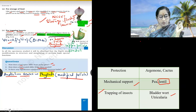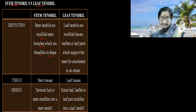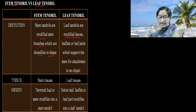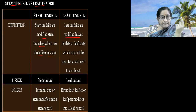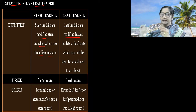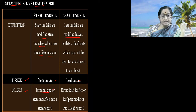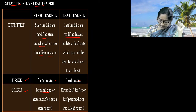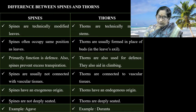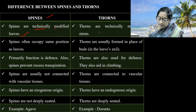Stem tendril and leaf tendril: a stem tendril is a modified stem branch, thread-like in shape. Leaf tendrils are modified leaves or leaf parts. In Nepenthes, the petiole is modified into a tendril — the petiole is the part of the leaf modified into the tendril. Stem and leaf tissues are present, originating from terminal buds or axillary buds. Whereas in some cases, the entire leaflet is modified into tendrils.